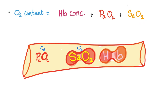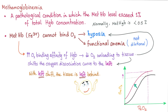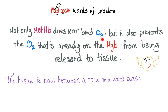Which is affected in methemoglobinemia? The SaO2 is decreased, PaO2 is normal, hemoglobin concentration is normal, so oxygen content is decreased. The definition of methemoglobinemia is when the methemoglobin level exceeds 1% of total hemoglobin. This causes a left shift of the oxygen dissociation curve, leaving the tissue without oxygen.